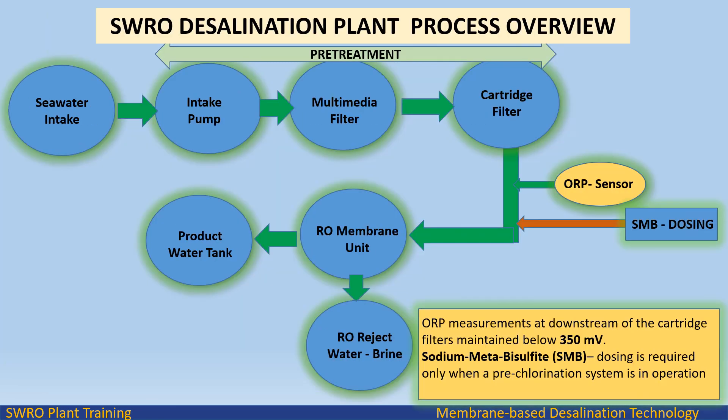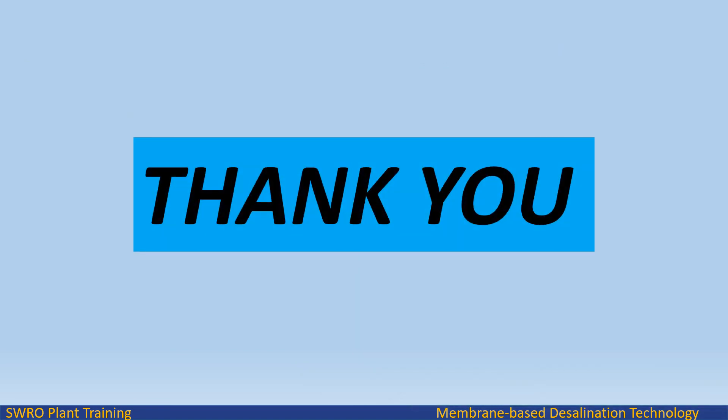Sample point location for ORP sensor and SMB dosing in RO plant: ORP measurements at downstream of the cartridge filters should be maintained below 350 mV. Sodium metabisulfite (SMB) dosing is required only when a pre-chlorination system is in operation.